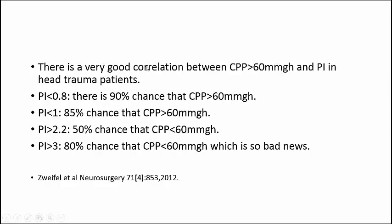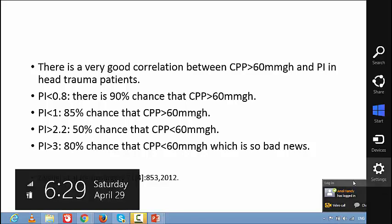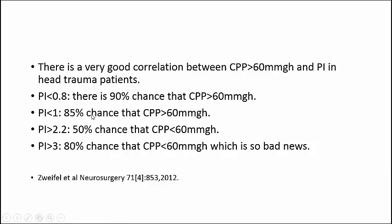PI measurement has prognostic value for secondary neurological deterioration in mild-to-moderate traumatic brain injury — the most concerning threshold is end-diastolic velocity below 25 cm/s and PI above 1.25. There is a very good correlation between cerebral perfusion pressure (CPP) and PI in head trauma: PI below 0.8 gives a 90% chance CPP is above 60 mmHg (good news); PI below 1 gives 85% chance CPP is above 60 mmHg; PI above 2.2 gives only 50% chance CPP is above 60 mmHg; PI above 3 means 80% chance CPP is below 60 mmHg — very bad news.